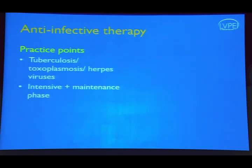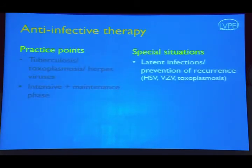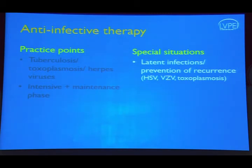Anti-infective therapy is most commonly used for tuberculosis, toxoplasmosis, herpes viruses, and fungal infections, with an intensive phase followed by a maintenance phase. Many organisms causing uveitis have latent infection causing recurrences, as frequently seen in viral infections and toxoplasmosis. Recent data shows that a low dose of anti-infective therapy given for a long time is useful in preventing recurrences.